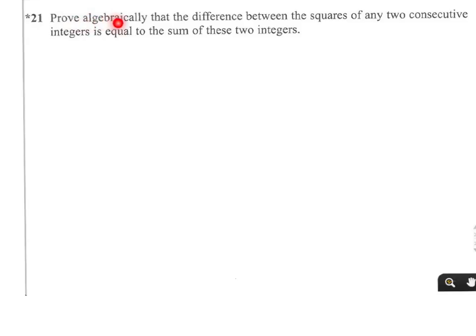We have to prove algebraically that the difference between the squares of any two consecutive integers is equal to the sum of these two integers. Now to help you understand that, I'm going to do that in numbers first and then change into letters.